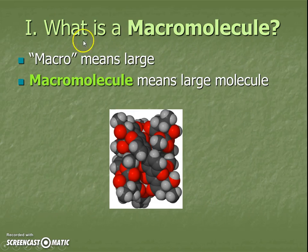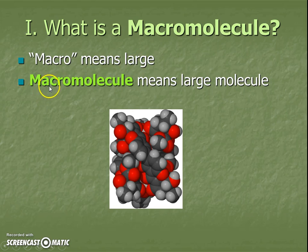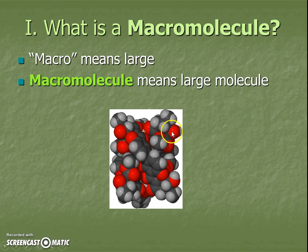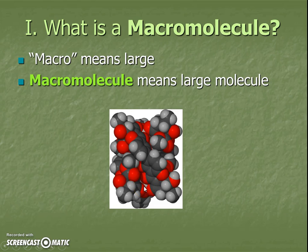Our first heading is: what is a macromolecule? Which was the title of the notes. Macro, the prefix in macromolecule, means large. So the whole word macromolecule means a large molecule. We might have heard that water is a molecule and have heard of other types of things that are these small molecules, but these ones are the macro type. That means they have to be very large — lots of atoms, sometimes even hundreds plus of atoms. Each of these different colored circular spheres is a different atom combined to make a large molecule.